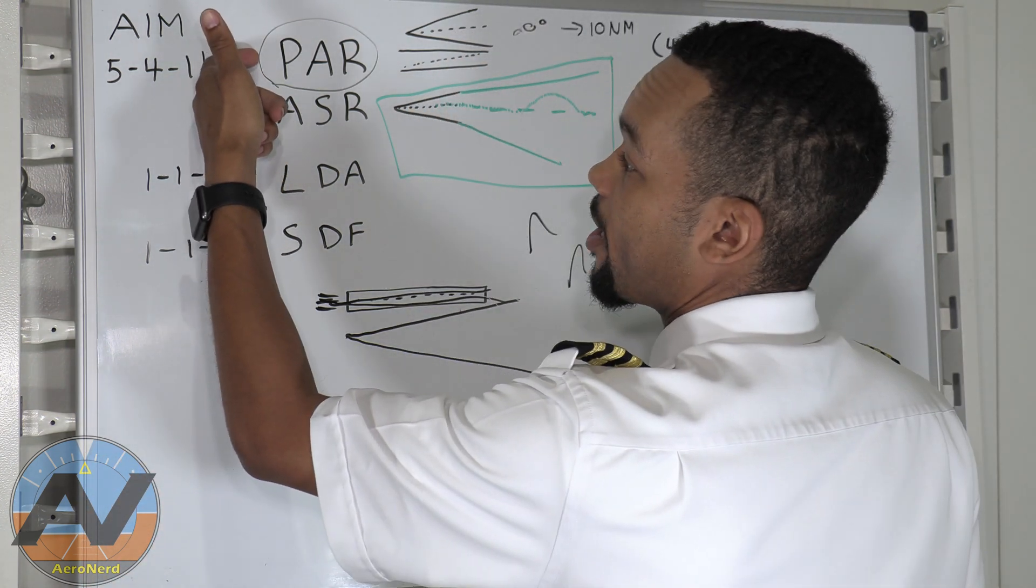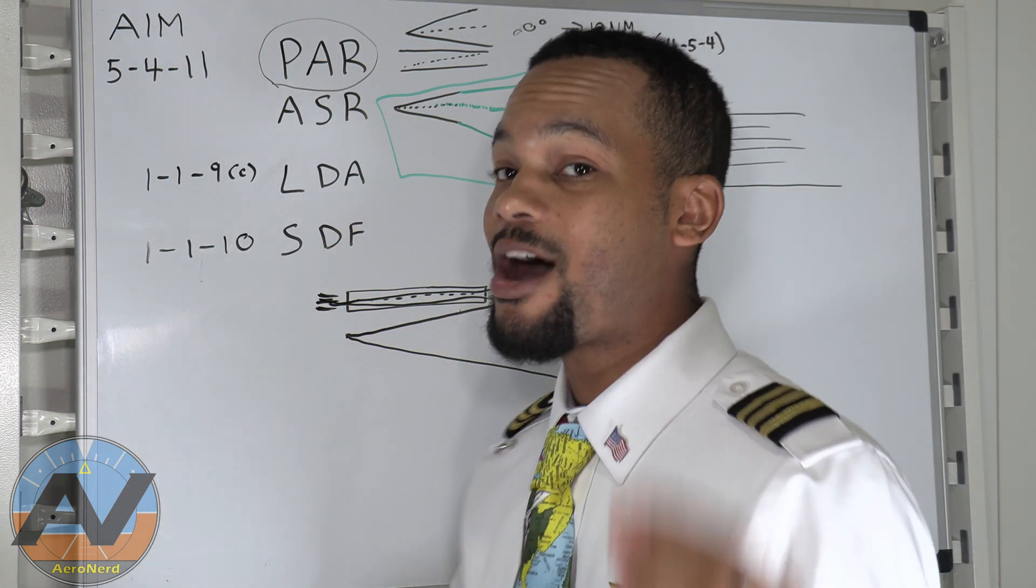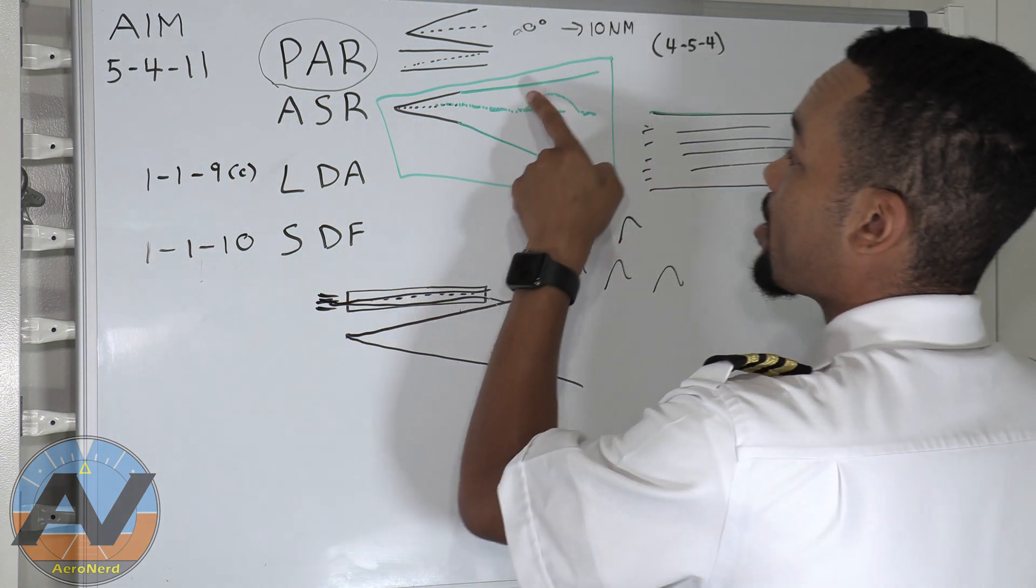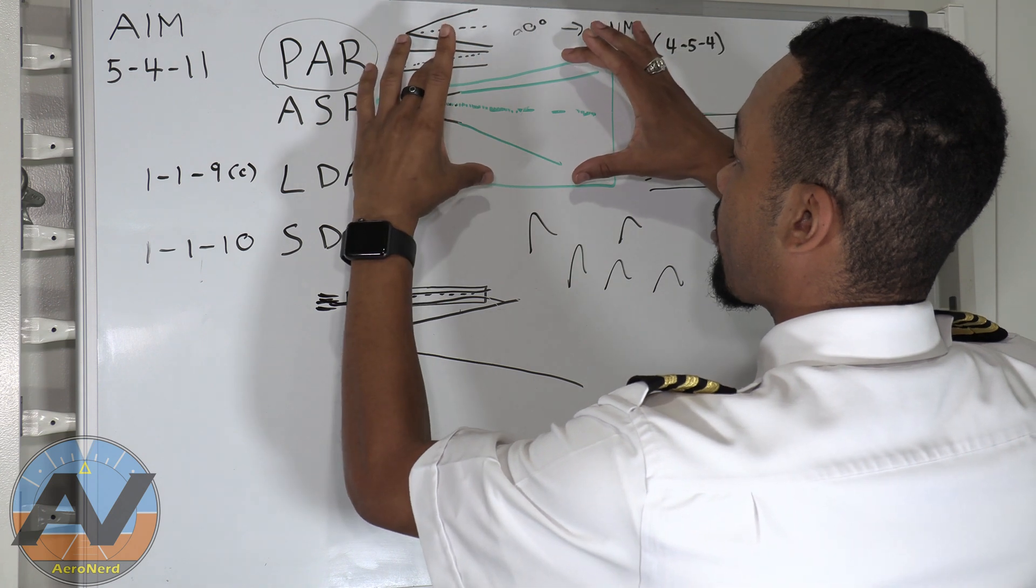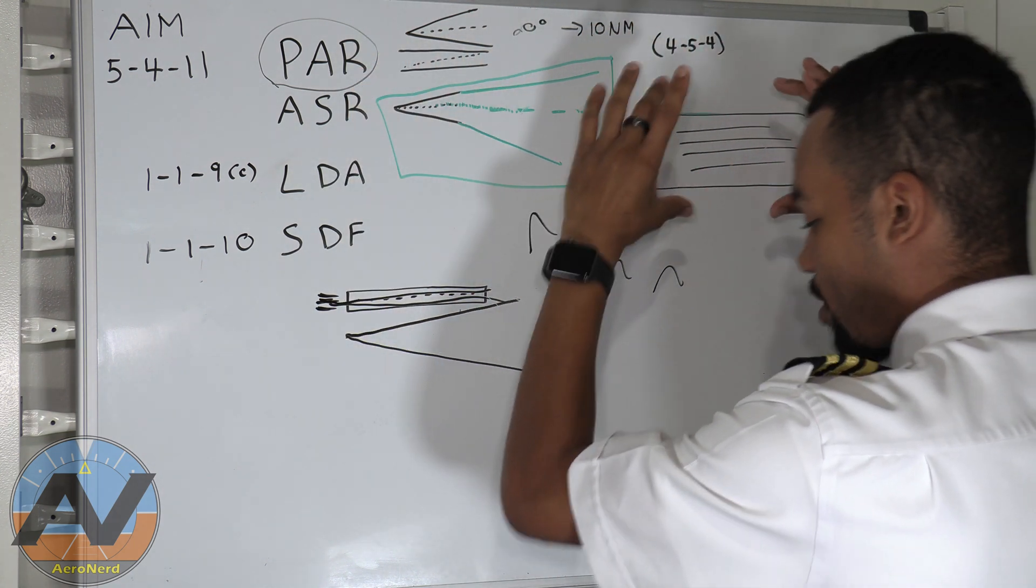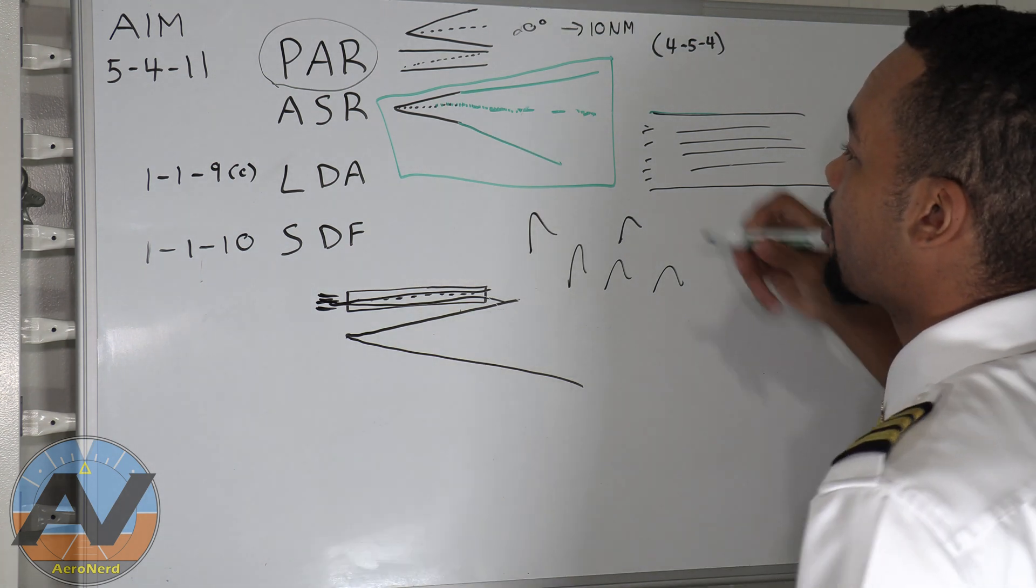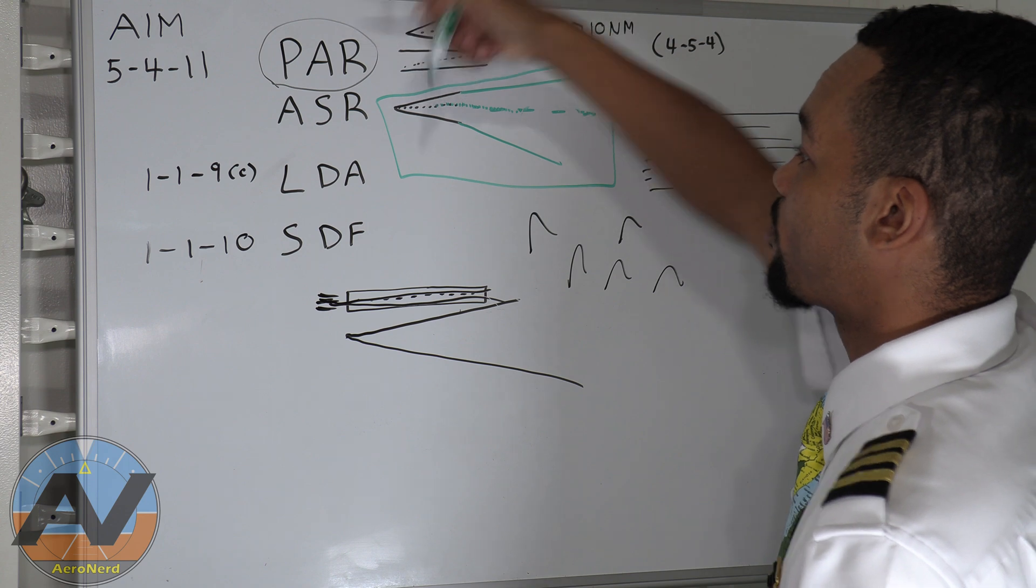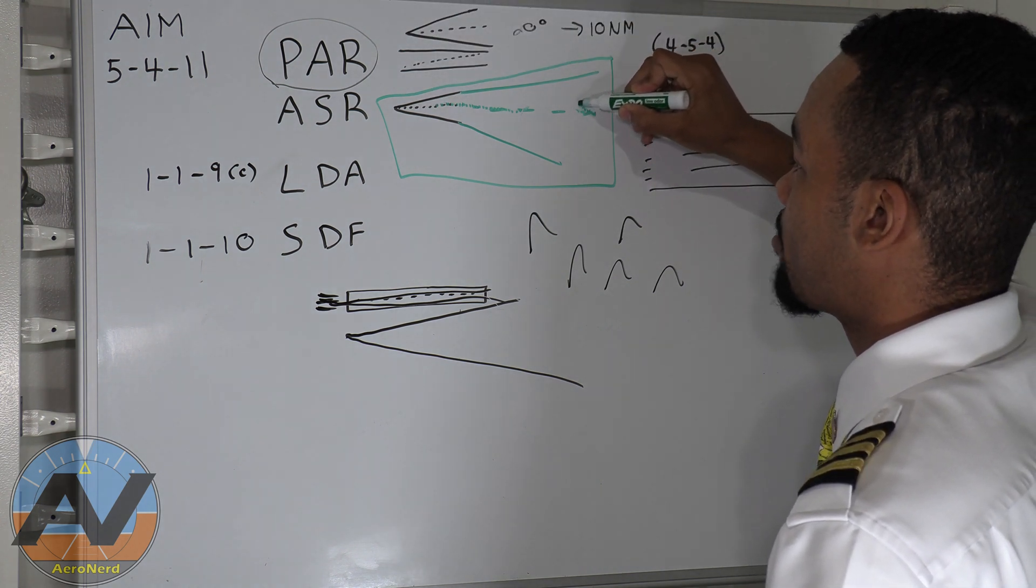So just see, this one has your glide slope, this one doesn't have the glide slope. Now what the tower sees on their radar screens, is when they do this, they have both the top down view of the aircraft, and they also have a side view, like a profile view. So let's say, here's our aircraft coming in.